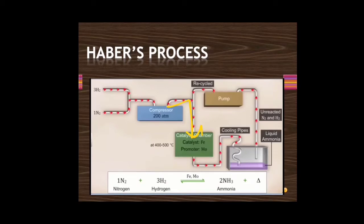In the catalytic chamber, iron (Fe) is the catalyst and molybdenum is the promoter. A temperature of 400 to 500 degrees Celsius is maintained. The reaction is: N2 + 3H2 → 2NH3 (ammonia). A lot of heat is also generated, meaning it is an exothermic reaction. Because of the high temperatures, the product must undergo a cooling process.